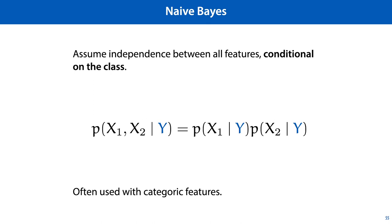The naive Bayes assumption is that all features are independent conditional on the class. Note that we do not assume that the features are independent in general — it's perfectly possible for one feature to be dependent on another, but they are conditionally independent. Informally, the dependency between features is caused by the class and nothing else, just like Alice and Bob in the first video, where their lateness had only one possible shared cause — the monster — and once we'd isolated that, their lateness was independent.